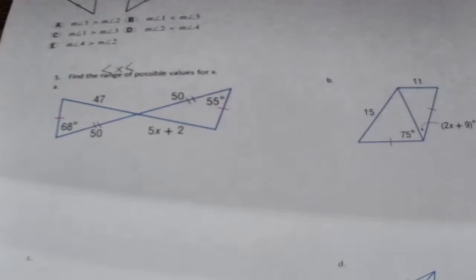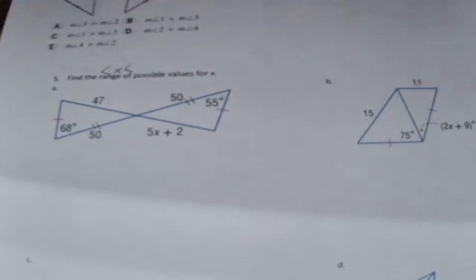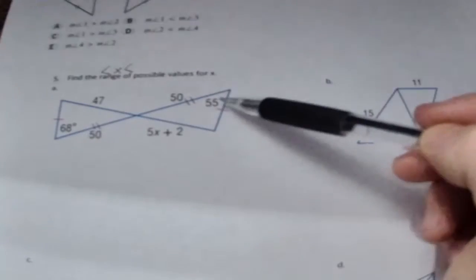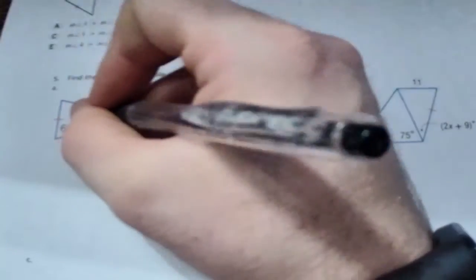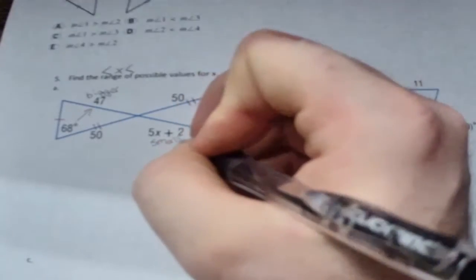So now when I try to figure out which one's going to be bigger, the 47 or the 5x plus 2, I'm going to base it off the angles. Now 68 degrees is bigger than 55 degrees. So since this is bigger, across from it will be the bigger side. So 47 is going to be bigger than the 5x plus 2, so the 5x plus 2 will be the smaller side.